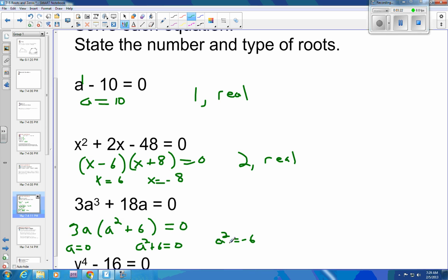And then you need to square root both sides. And when you square root both sides, this becomes a positive and a negative here. And so you end up with a being equal to a positive or negative i square root of six. And the negative becomes a negative. Here we have one real and we have two imaginary. One real, two imaginary.